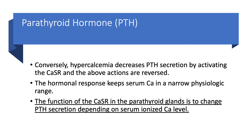Therefore, we can conclude that the function of the calcium sensing receptor in the parathyroid glands is to change PTH secretion depending on serum ionized calcium level. Calcium goes up and down, the calcium sensing receptor responds by either increasing or decreasing PTH secretion, and PTH takes over from there.